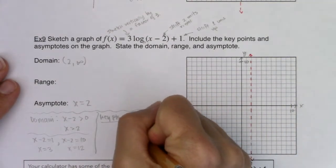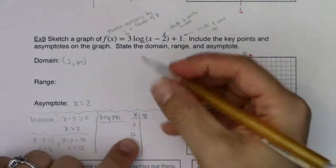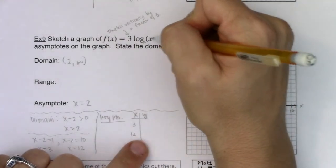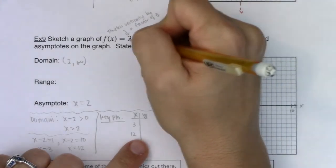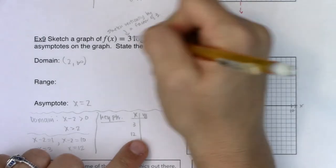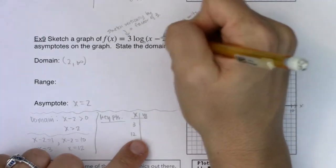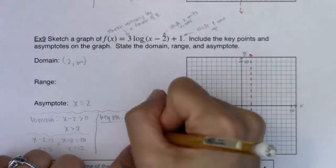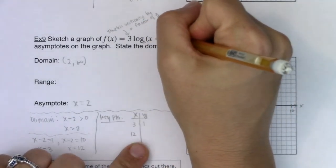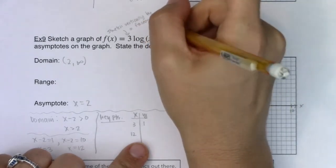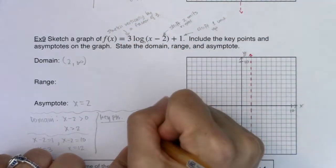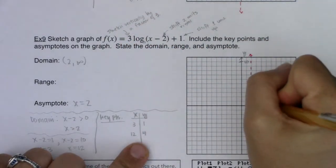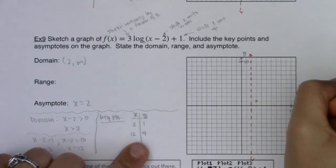0 times 3 is 0, and 0 plus 1 is 1. Let's try 12. 12 minus 2 is 10. Log base 10 of 10 is 1. 1 times 3 is 3, and 3 plus 1 is 4. So let's do 3, 1, and even though I kind of ran out of room, 12, we'll go 1, 2, 3, 4, right there.